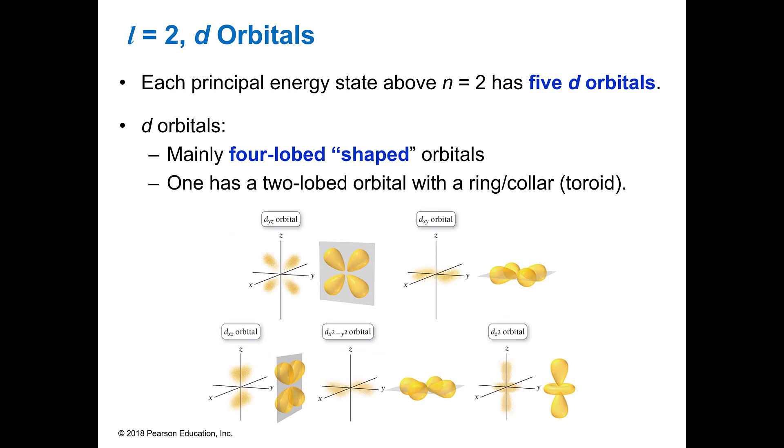If L equals 2, then it is a D orbital. And there are five D orbitals. And they have these four lobes, but one of them has this little collar around it called a toroid. So the rest of them are four lobes, but this last one, D sub Z2, has got the little toroid, the little ring around it.